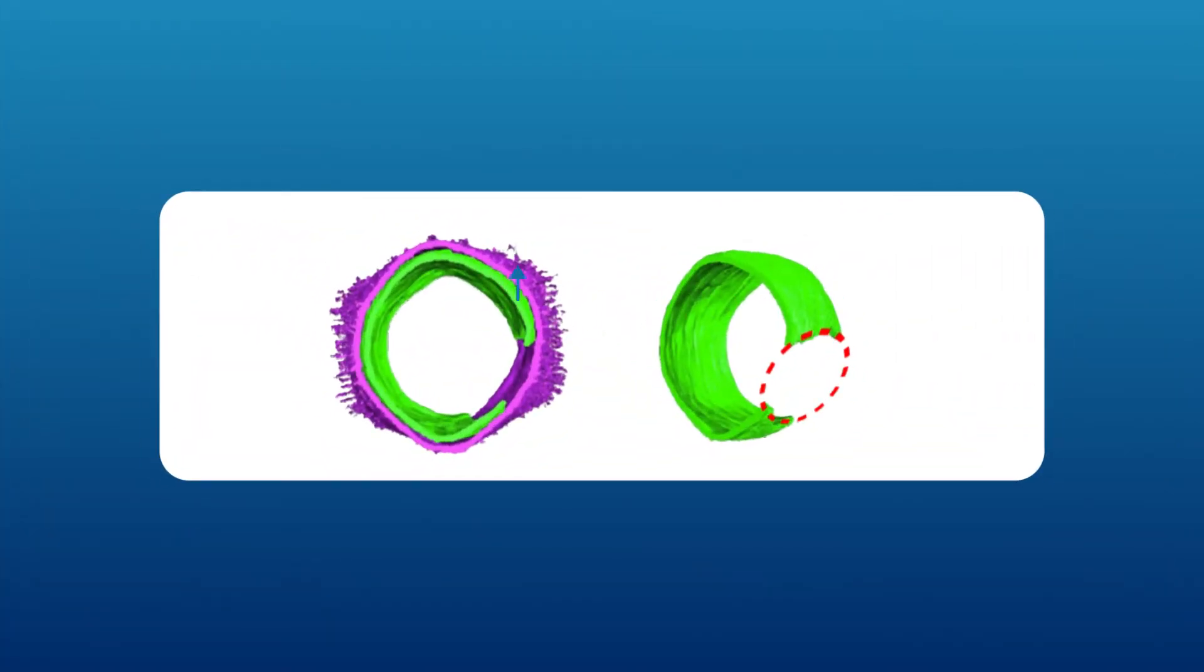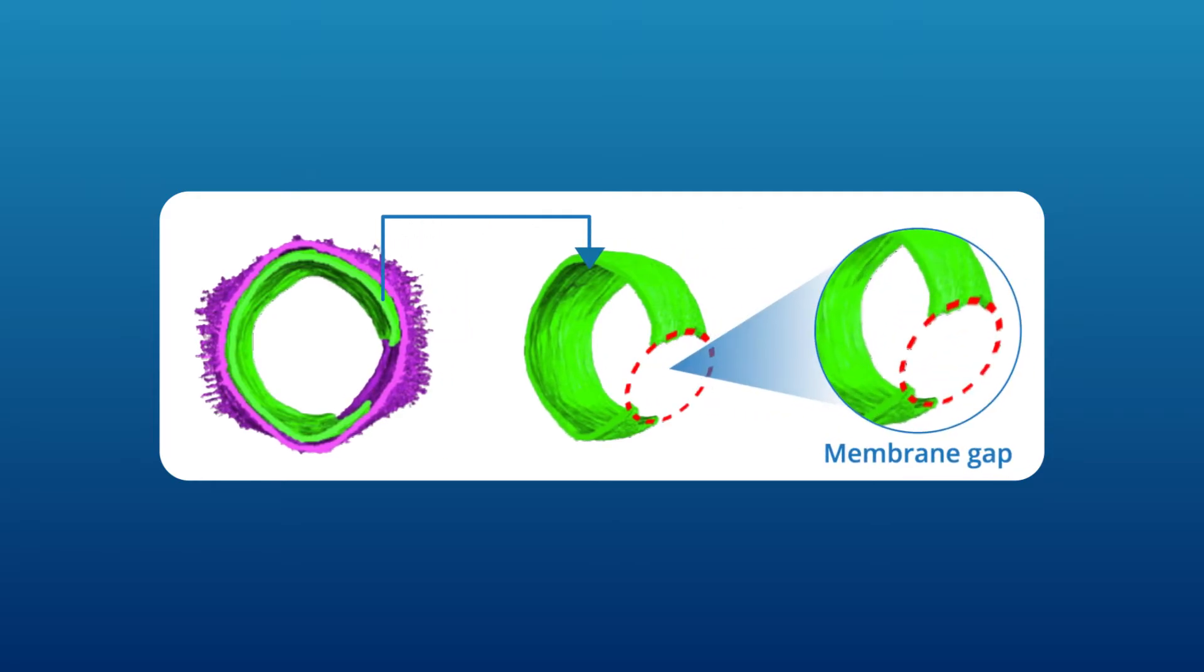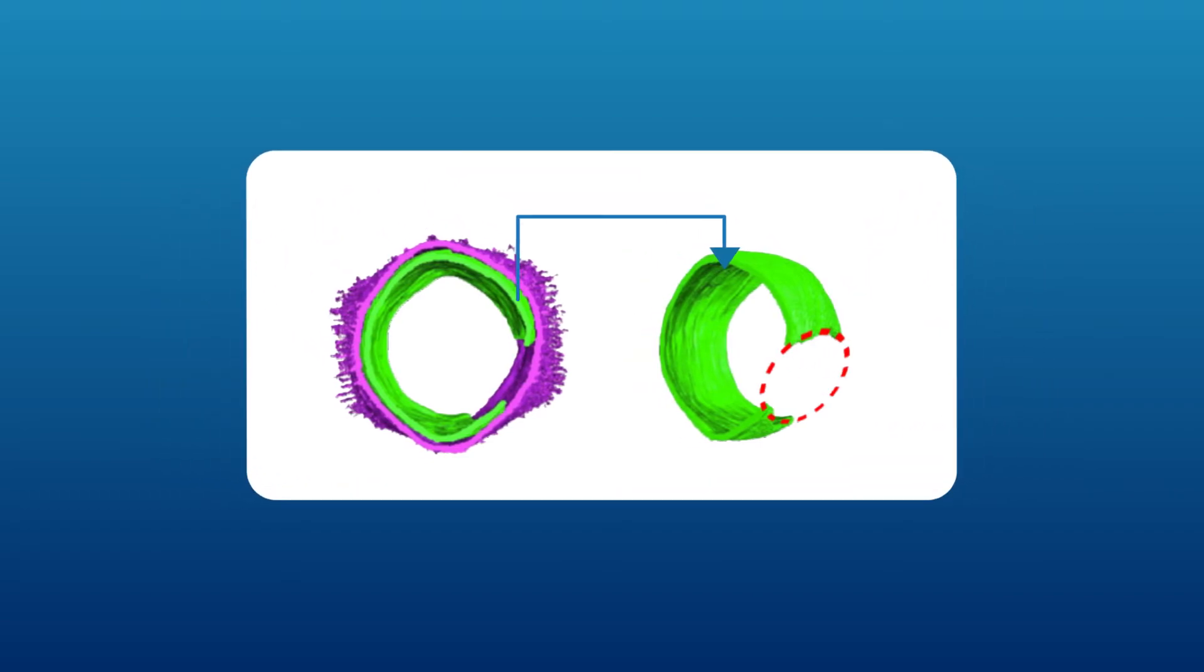On examining the internal viral membrane, the team discovered open membrane structures or membrane gaps in the P-empty and empty particles, suggesting that the virus uses these gaps to exchange proteins and DNA necessary for maturation.